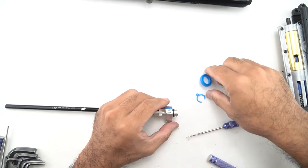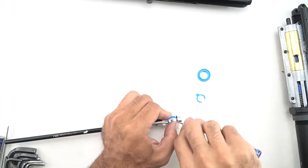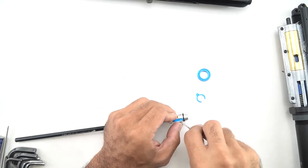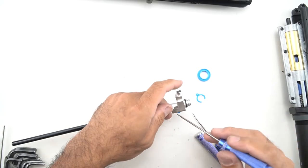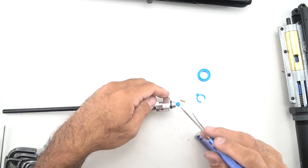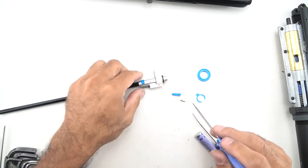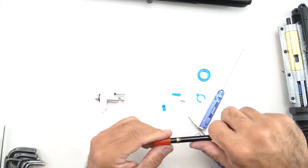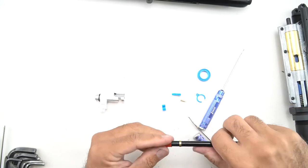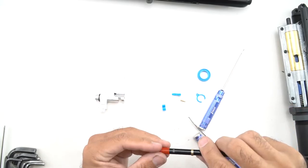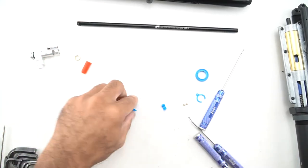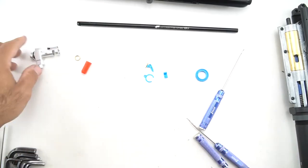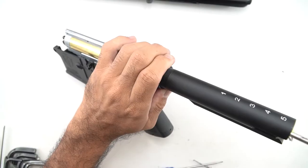I've already gone ahead and removed the upper receiver and we have the hop-up unit apart here. We opted to replace with the CNC production metal hop-up chamber and the Mad Bull 6.03 black python barrel, the most popular kind that we sell, and then this is their CNC bucking that comes with the hop-up chamber. I would also highly recommend doing a Mad Bull blue bucking, very popular as well.